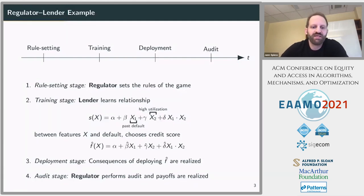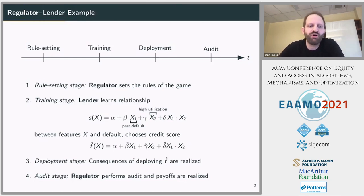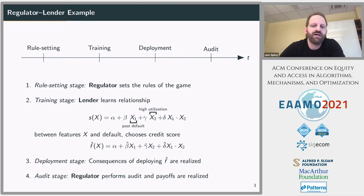In the third deployment stage, the consequences of deploying that function are realized — for example, using the credit score to allocate credit and asking what kind of disparities or systemic risk that creates. The final stage is an audit stage, where the regulator checks whether that allocation is compliant with the rules set out, and payoffs to the players are realized.